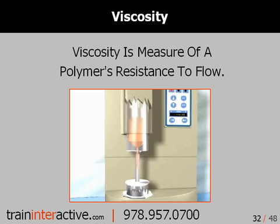Viscosity is a measure of a polymer's resistance to flow. Here you'll see a small animation of a capillary rheometer, similar to that of a melt flow indexer. Such instruments force polymer through an orifice either at a constant rate or under a constant load. A melt indexer measures the weight of the polymer that's forced through an orifice under a fixed load during a period of 10 minutes.